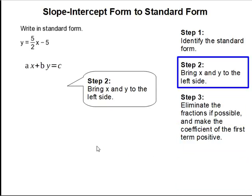Step 2: Bring x and y to the left side. Since x and y are on the left side of the standard form, we need to do this to our slope-intercept form. So in this case, we are going to subtract 5 over 2x to bring it over to the left side.